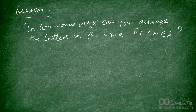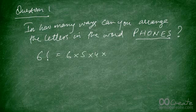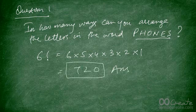Here's a question: in how many ways can you arrange the letters in the word 'fonts'? There are six letters and no repetition, so we use the formula n factorial, which is six factorial. That's six times five times four times three times two times one, equal to 720. So there are 720 arrangements of all the letters in the word 'fonts'.